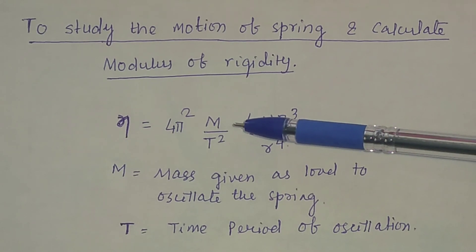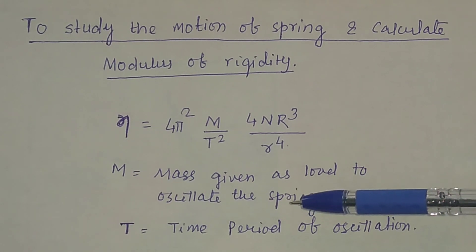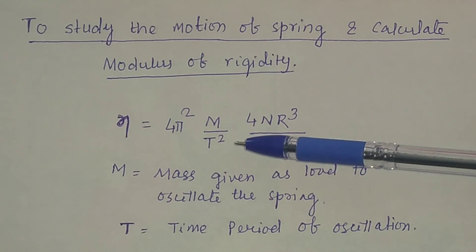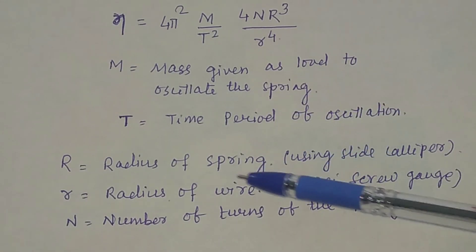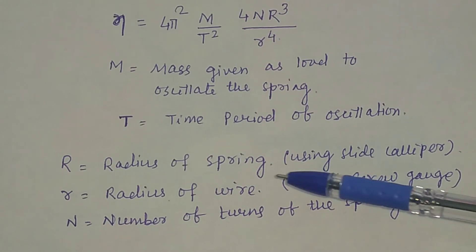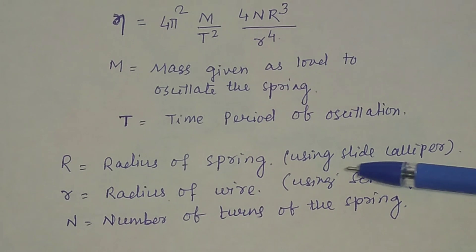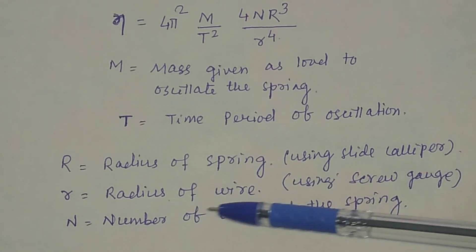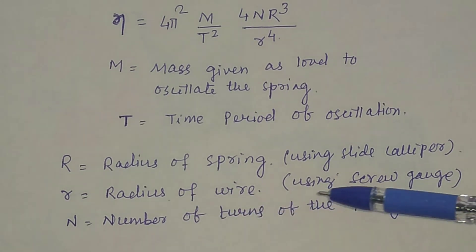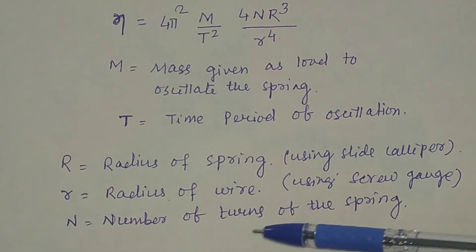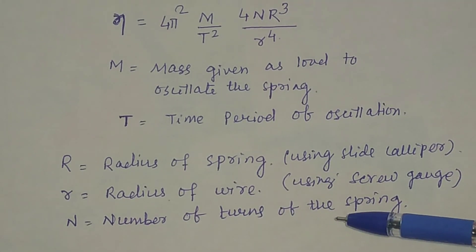Here, m is the mass given as a load to oscillate the spring. T is the time period of oscillation. R is the radius of the spring, which you can measure using a slide caliper. Small r is the radius of the wire, which you measure using a screw gauge. And n is the number of turns of the spring, which you can count directly.